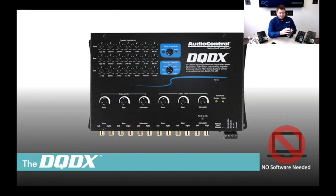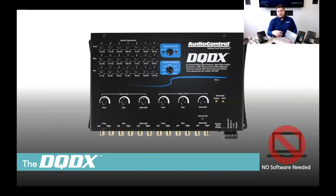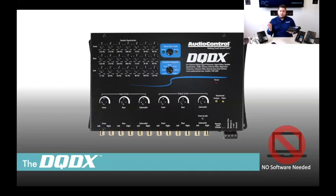The DQDX has a signal delay module — a form of time alignment, time delay, or time correction. It does this with analog controls. The product comes with one of our ACR dash control knobs, which you'll use for setting it up. Let me plug power into this so you can see it work.